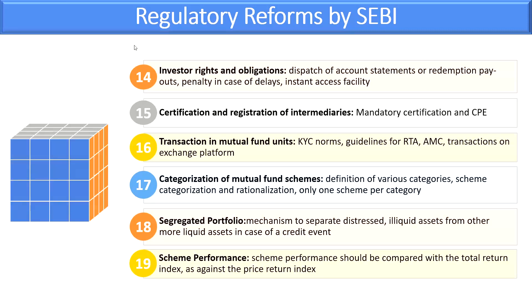For categorization of mutual fund schemes — which we saw in Chapter 2 — there are provisions for definition of various categories, scheme categorization and rationalization. SEBI says that in one fund house, there will be only one scheme per category — not multiple different schemes for the same category. All such provisions need to be followed by the mutual fund company.